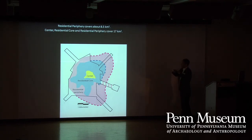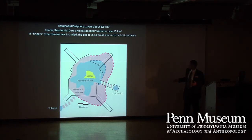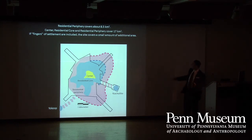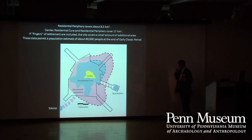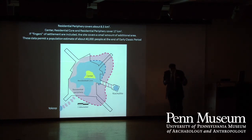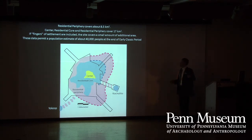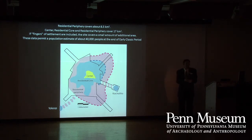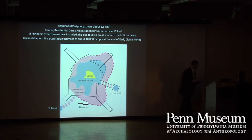Putting that data together, we estimate the residential periphery covered about eight and a half square kilometers. Combined, the periphery, core, and center are about 17 square kilometers, with a little bit more in what we call fingers that move out to some nearby sites. Using the same methods of estimation used at other Maya sites, we would say this city had 40,000 people — which was pretty exciting to find.